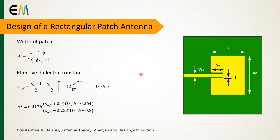Because of fringing effects, electrically the patch of the microstrip antenna looks greater than its physical dimensions. Therefore, the dimension of the patch along the length has been extended on each end by a distance delta L. Delta L is approximated with this relation.